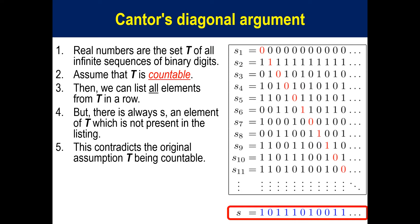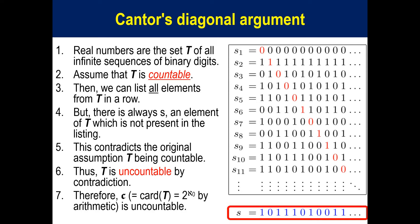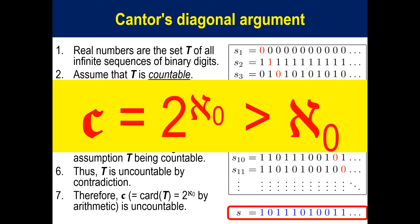This contradicts the original assumption of T being countable. Thus, T is uncountable by contradiction. Therefore, C, which equals |T|, which is 2 to the power of ℵ₀ by arithmetic, is uncountable. Thus, C equals 2 to the power of ℵ₀ and is larger than ℵ₀.